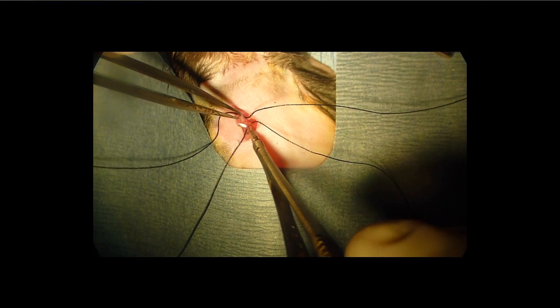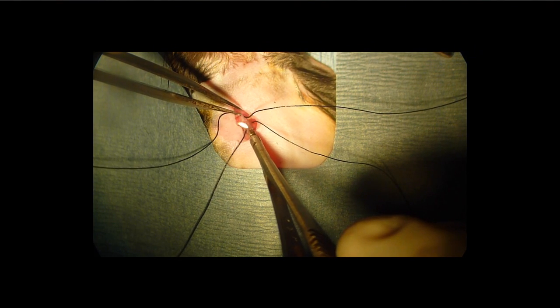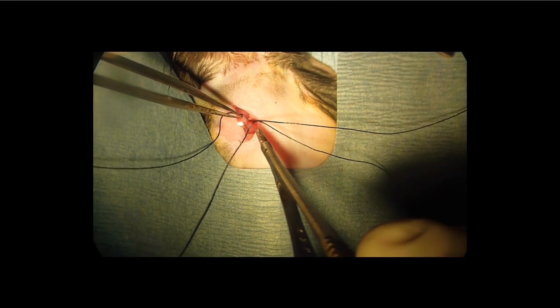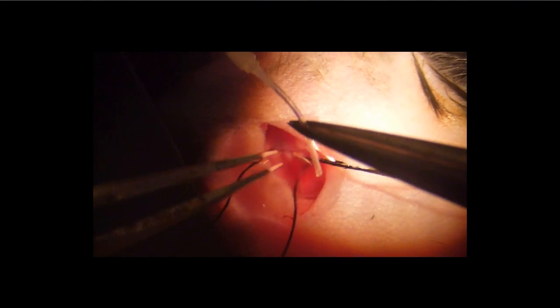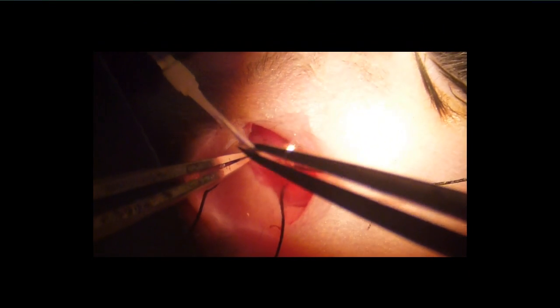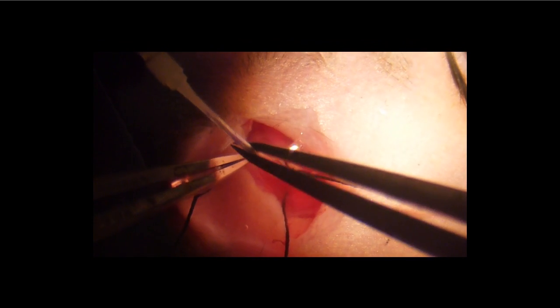Perform a venotomy using microdissection scissors just proximal to the ligating suture. Insert the mouse jugular catheter into the vein and advance 4 millimeters.